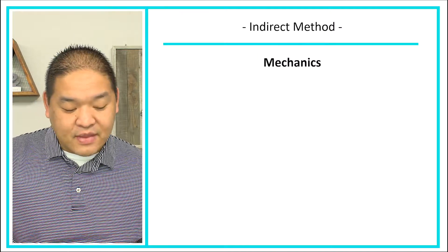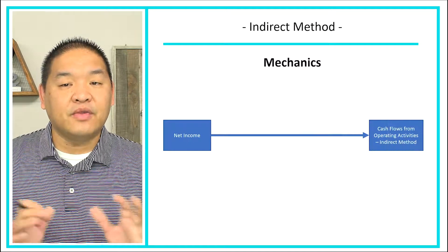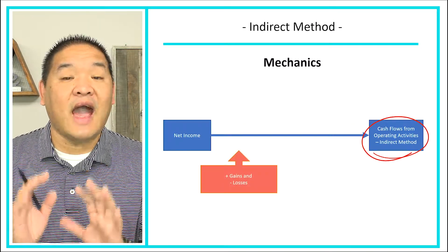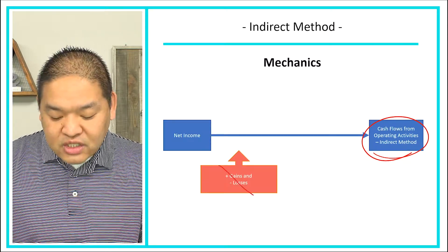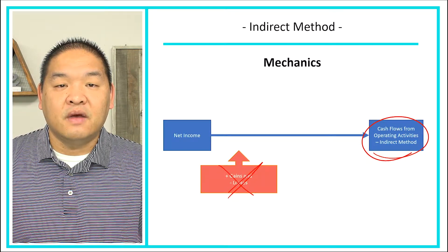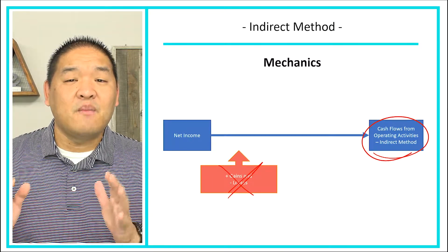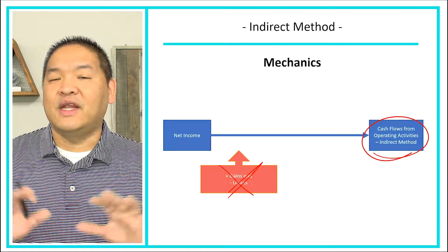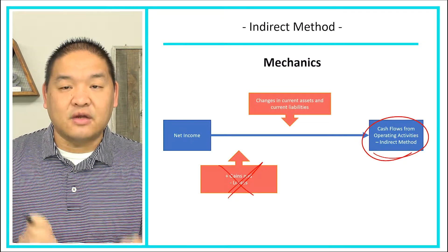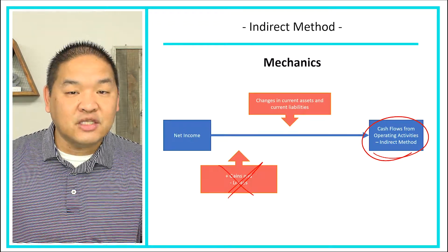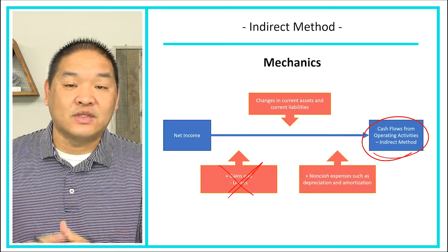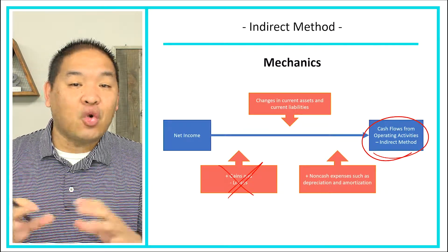The mechanics of the indirect method start with net income, then we do a couple of things to arrive at cash flows from operating activities. First, there are gains and losses — we're going to skip that for now as it's more of an intermediate topic. Then we figure out the changes in current assets and current liabilities and make those adjustments to net income. Finally, we add non-cash expenses such as depreciation and amortization.